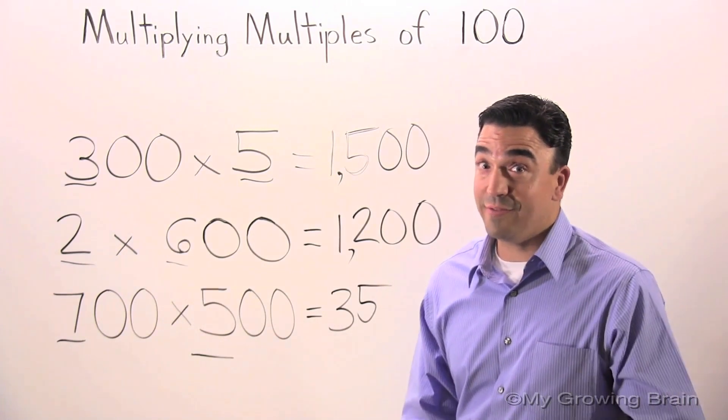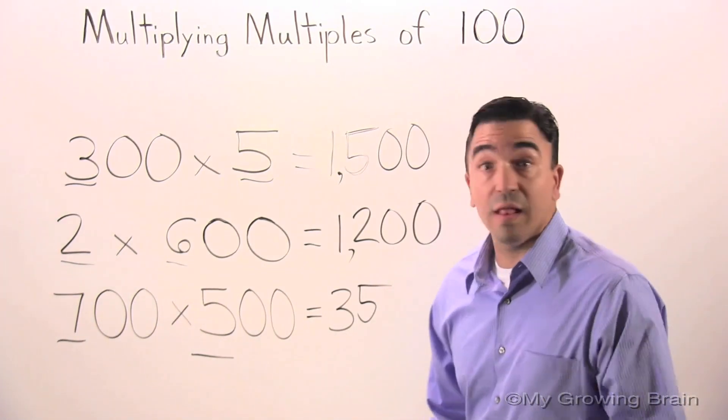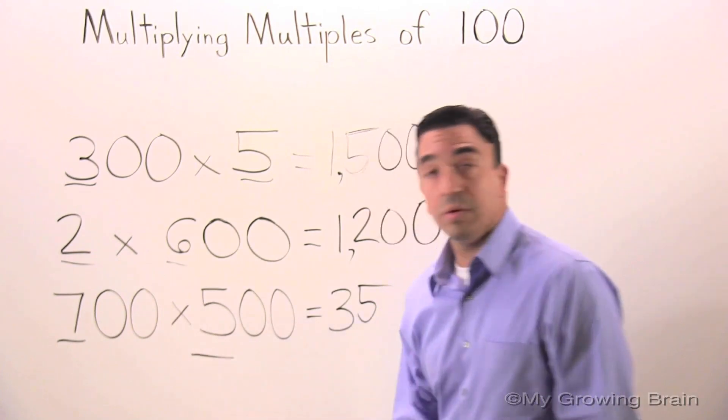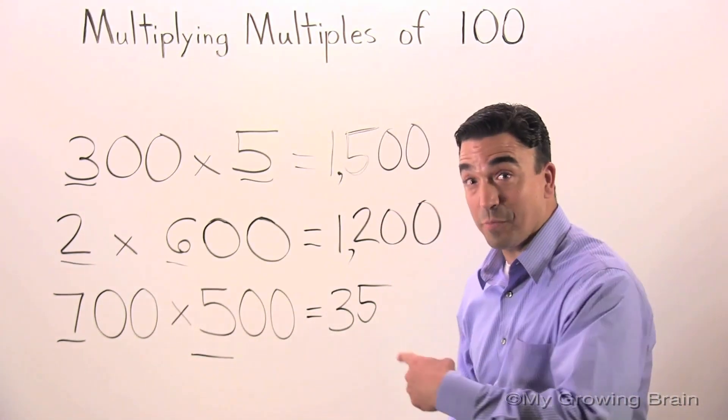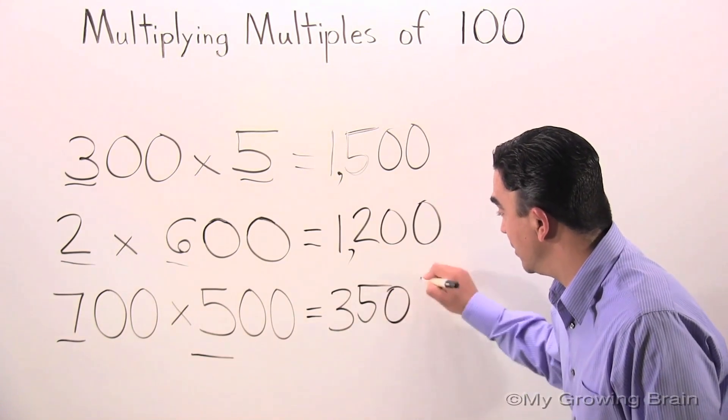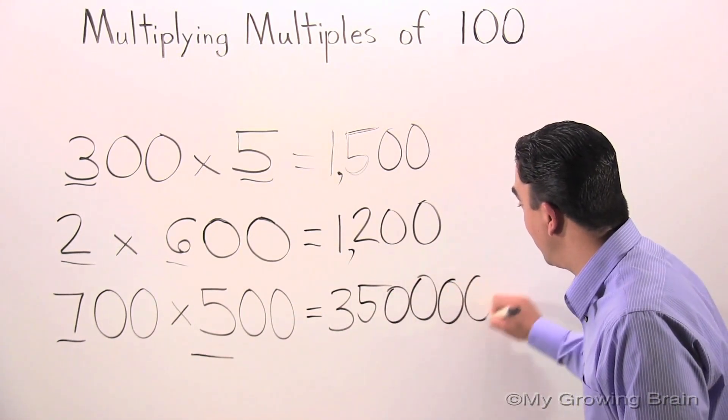Now, this time we have a lot of zeros. Let's count them: 1, 2, 3, 4. Let's put them over here: 1, 2, 3, 4.